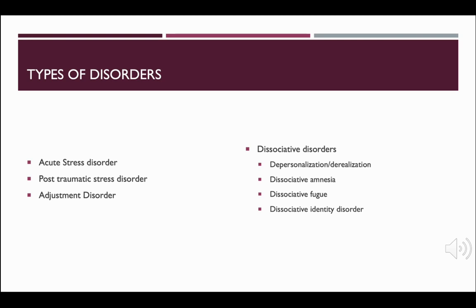Let's look at the types of disorders under trauma and stress related disorders. Acute stress disorder is exposure to traumatic events which causes anxiety, detachment and other manifestations about the event for at least three days but not more than a month following the event. PTSD, or post-traumatic stress disorder, is when an exposure to a traumatic event causes anxiety, detachment and other manifestations about the event, and these feelings last for more than a month but can last for years.